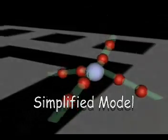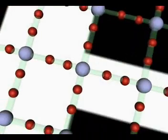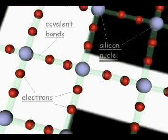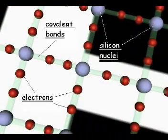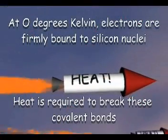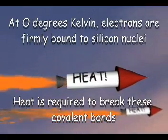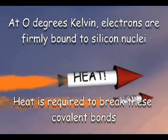Let's simplify the model to make it easier to understand. At absolute zero, the electron is strongly bonded to its parent nucleus.